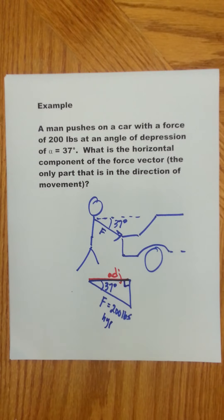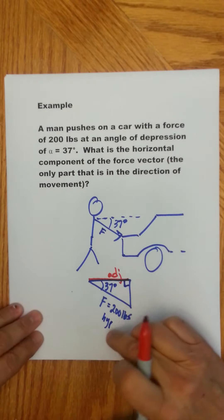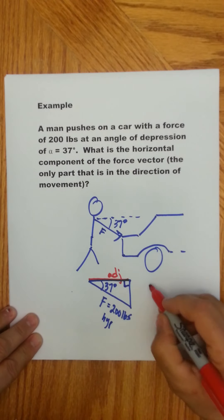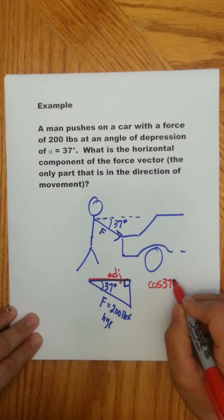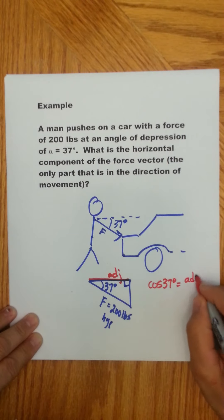Which trig ratio works with adjacent and hypotenuse? That would be cosine. So cosine of 37 degrees equals the adjacent, what I'm looking for, over F, which is 200.